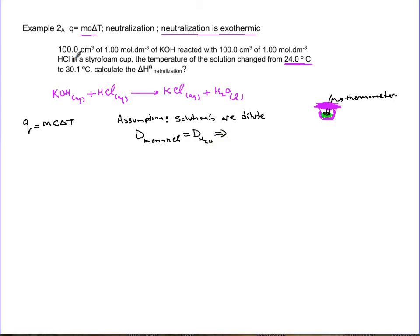By doing that assumption, we can say 100 cm³ is like 100 grams because every 1 cm³ is 1 gram for water. So I have 100 grams for KOH, 100 grams for HCl, so my total mass is 200 grams.